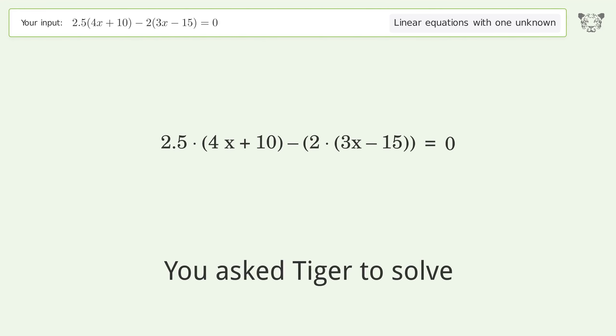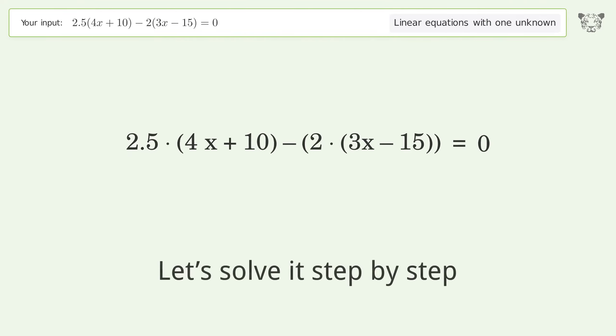You asked Tiger to solve this. It deals with linear equations with one unknown. The final result is x equals negative 55 over 4. Let's solve it step by step.